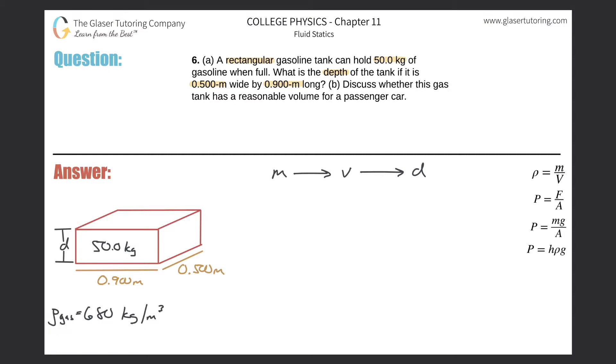First thing is we need to know the density of gasoline. That's about 680 kilograms per cubic meter. So density of gasoline equals mass over volume. Solving this for V, that's simply the mass divided by the density. We know the mass was 50 kilograms and we know the density.